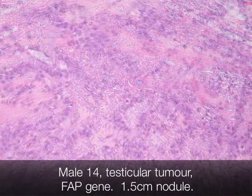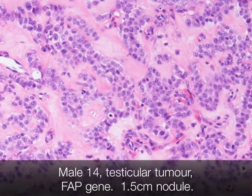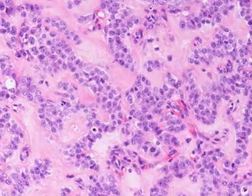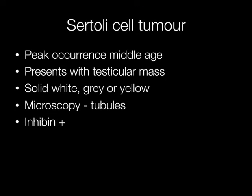This case is another sex cord stromal cell tumour — in this instance a Sertoli cell tumour. The peak age at which these occur is in middle age, and patients present with a testicular mass that grossly will have a solid white, grey or yellow appearance. Microscopically the tumour cells often form tubules, and again in this type of tumour inhibin is positive.